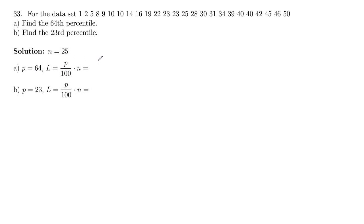So here we want to take that 64, divide by 100. So basically take the percentile as a decimal and multiply it by the sample size of 25. So this is saying what position that percentile is going to be in.